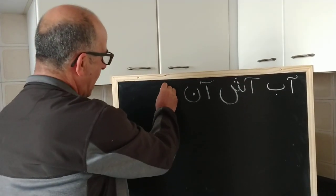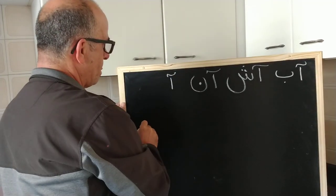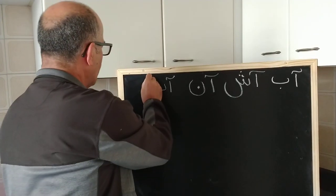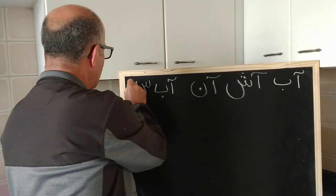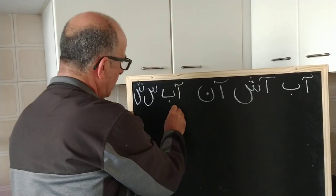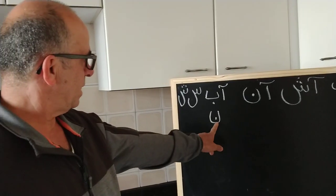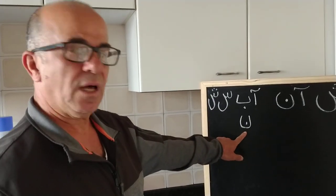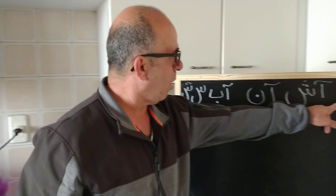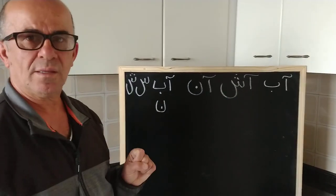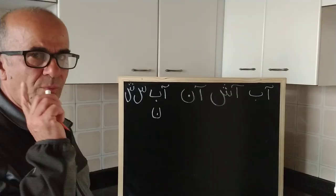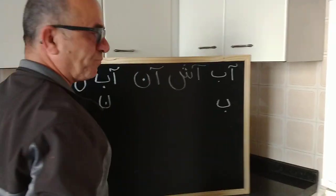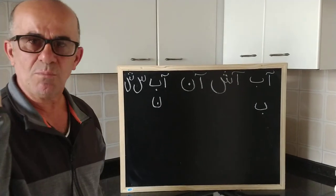The letters are Aleph, Be, Sin, Shin, Nun. So A, B, Sin, Shin, Nun. Now with B — or 'Be' — you can learn three more letters.